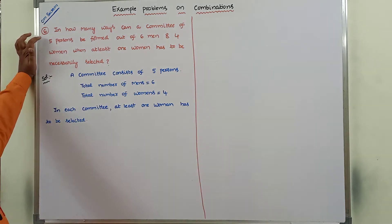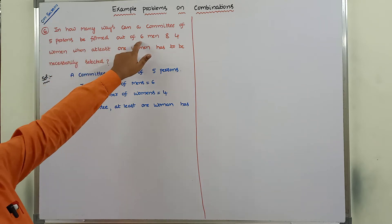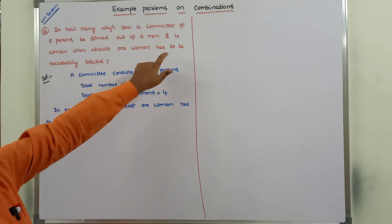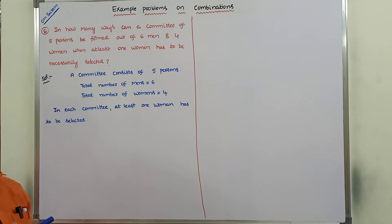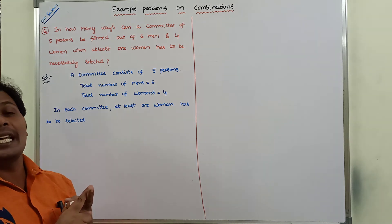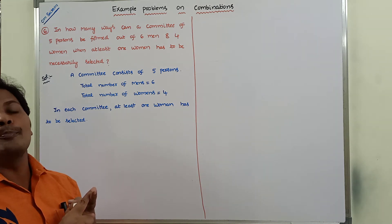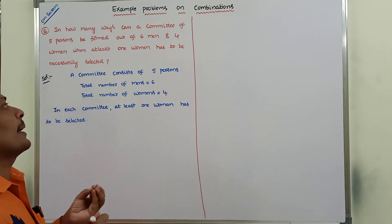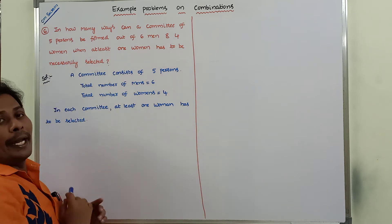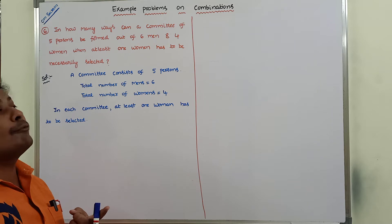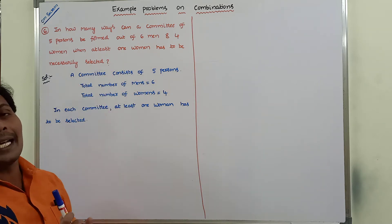In how many ways can a committee of 5 persons be formed out of 6 men and 4 women, when at least 1 woman has to be necessarily selected? In the given problem, a committee consists of 5 persons, and those 5 persons can be taken from 6 men and 4 women. Among them, compulsory at least 1 woman is necessarily selected.